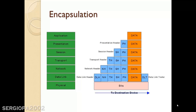Continuing our conversation about networks, there is a concept that is important to know and understand, and it's quite easy to understand too — it's called encapsulation. On the left side I have my seven layers of the OSI reference model, and on the right side I have a representation of a data package in each of these layers.